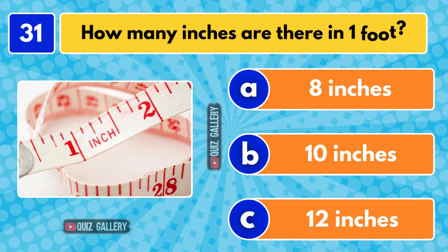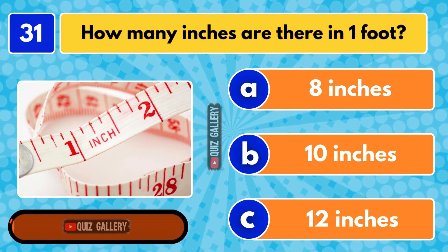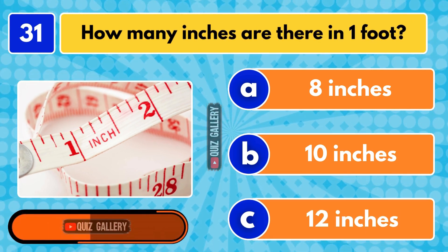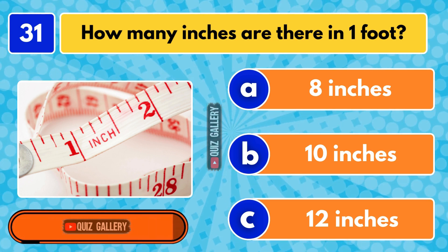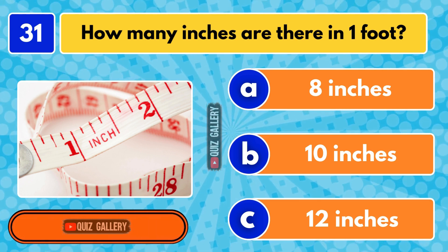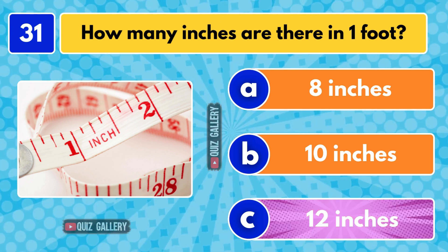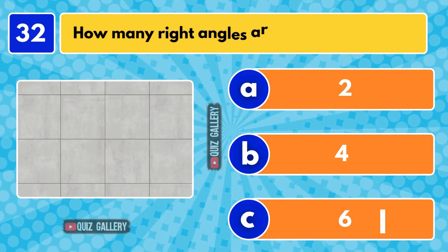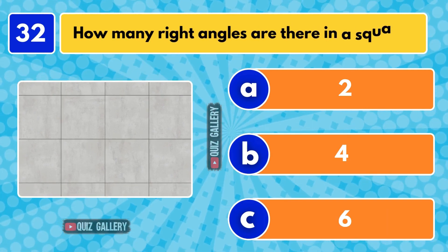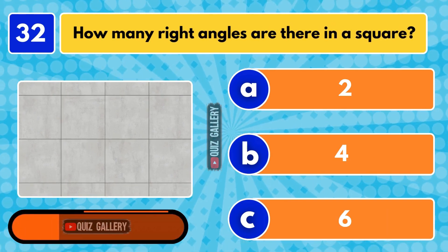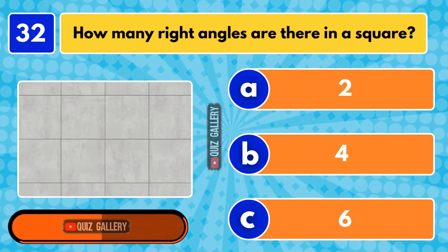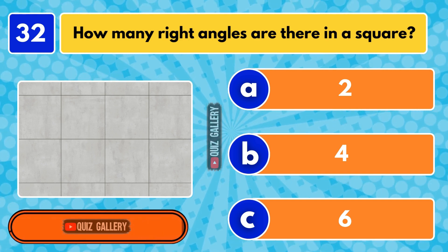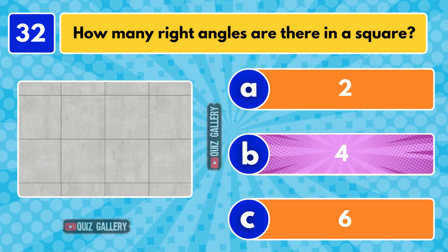How many inches are there in a foot? 12 inches. How many right angles are there in a square? Four right angles.